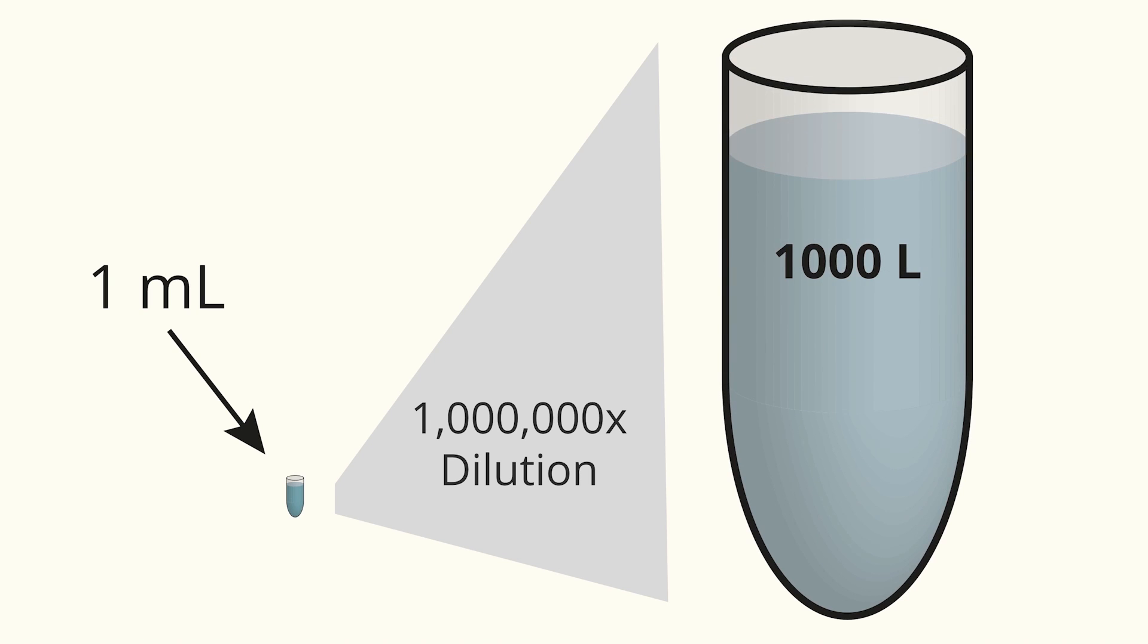Let's say that in one gram of yogurt, we have 10 million CFUs. If we want to have around 10 colonies instead of 10 million on a petri dish, we would need to dilute that one gram of yogurt one million times. To do this, we could take that gram and mix it with 1,000 liters of water.